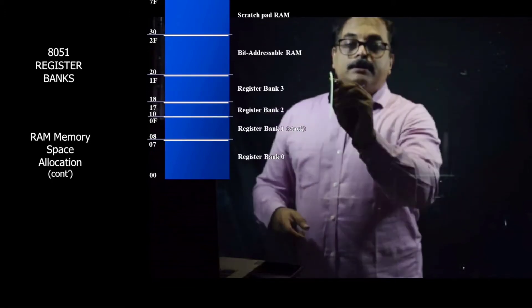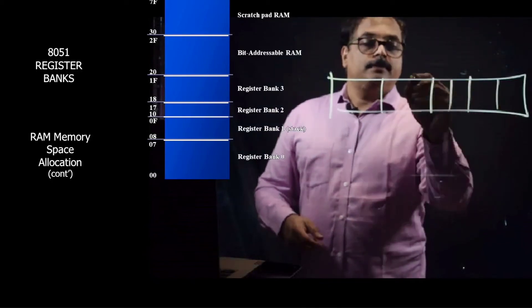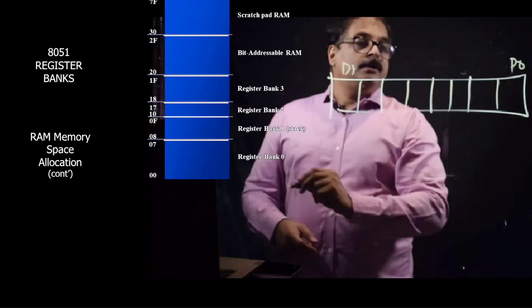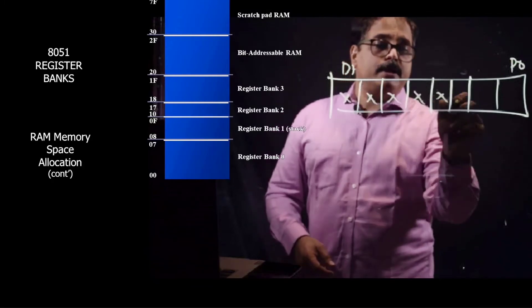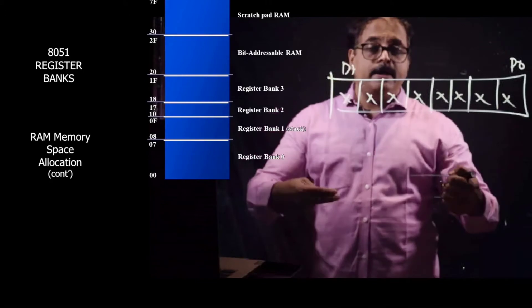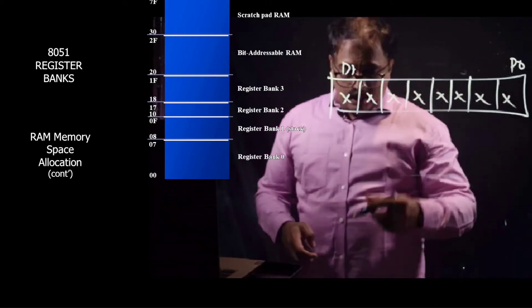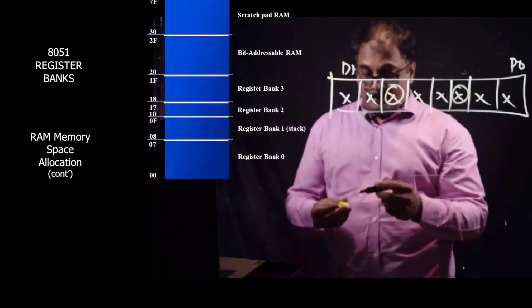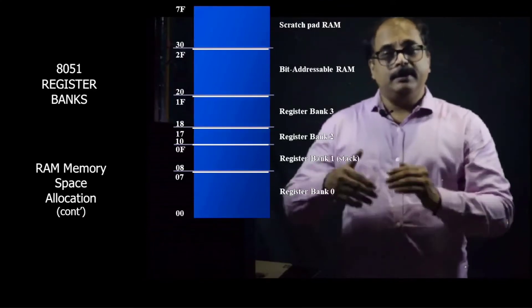For example, see this is a register which has got 8 bits, D0 to D7. If it is byte addressable, all these bits at a time will be written or you will have to read all these bits at a time. But if it is bit addressable, any of the particular bit can be set or reset.